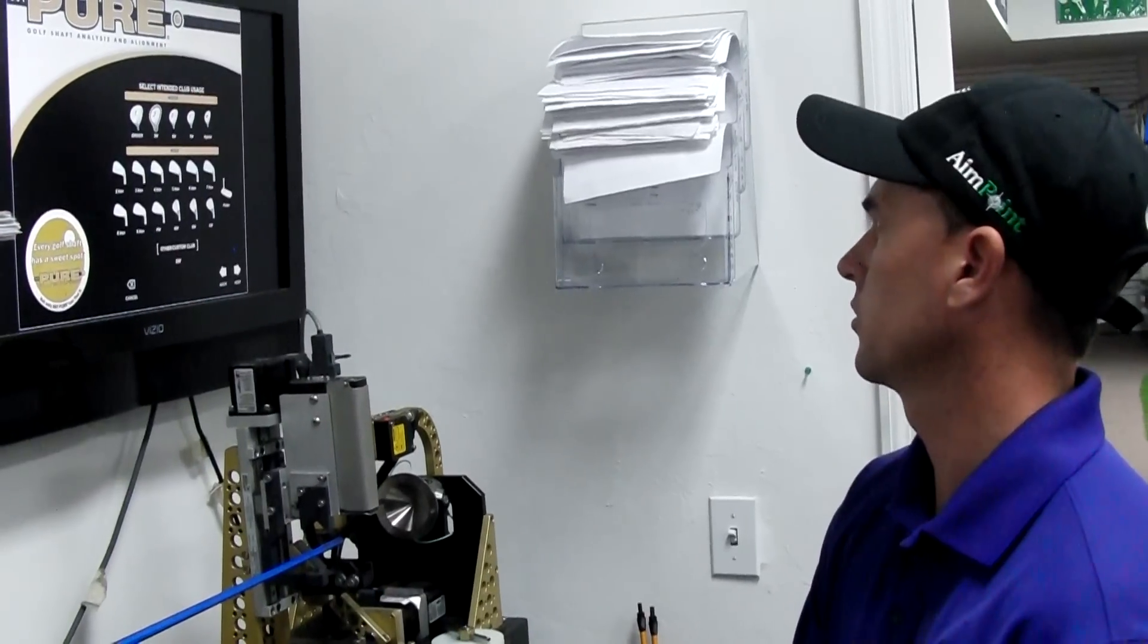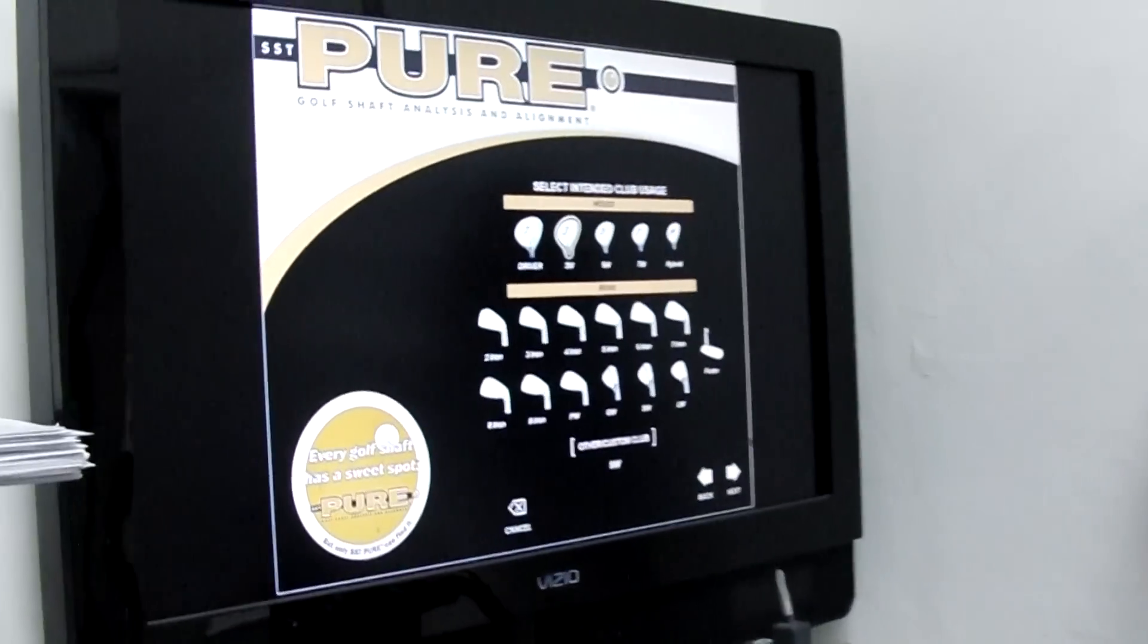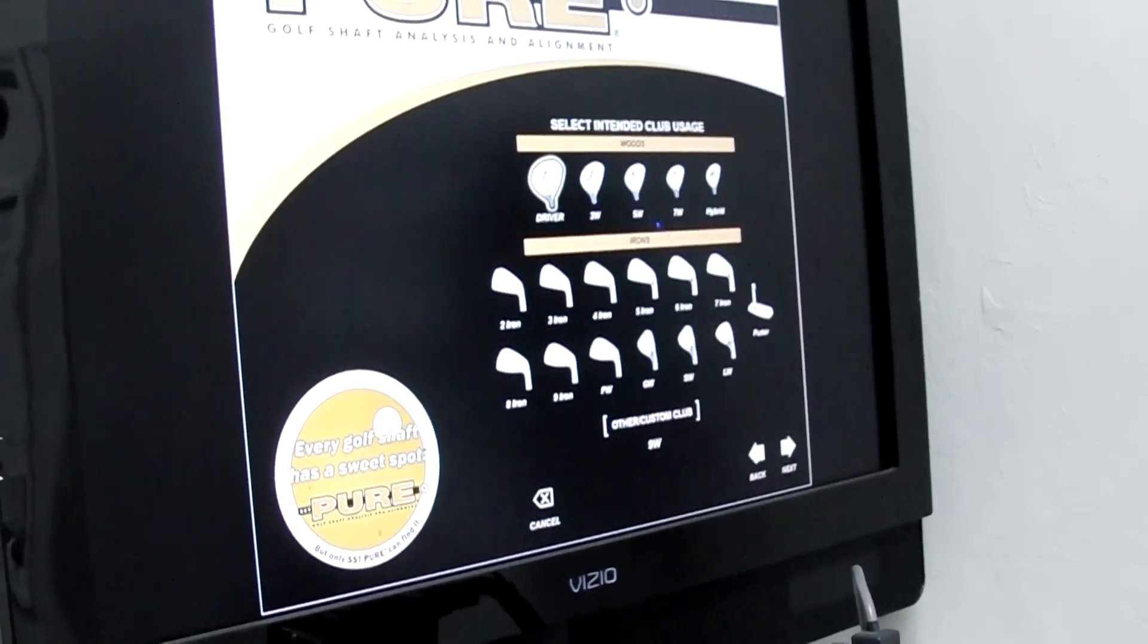This is an O2 flex. I'm going to go through the whole test with you. This is clubs. We keep track of which clubs we're working on for the client set. This is going to be a driver shaft.